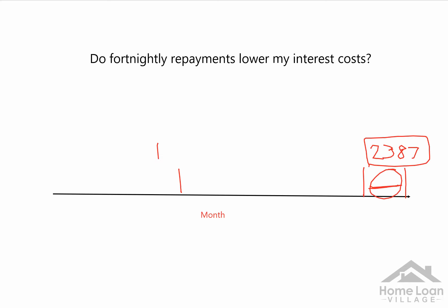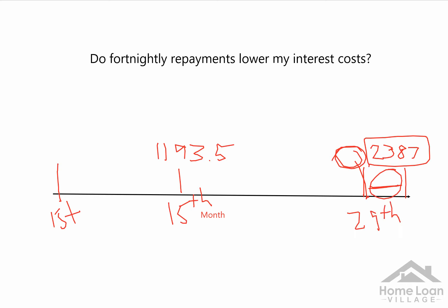So we've got one repayment of $1,193.50 and another repayment of $1,193.50, and then a few days to the end of the month. The same amount normally came out this month. But every now and then, you're going to have a month where you have essentially three of the same repayment day — so you might have the 1st, the 15th, and the 29th — because there's more than two fortnights in a month. So every now and then, you're going to have a month where three repayments are taken out, which is a lot more than is actually needed.